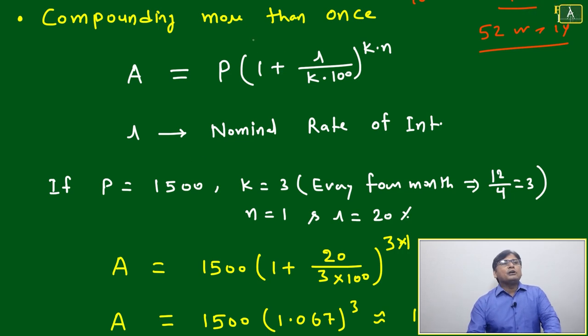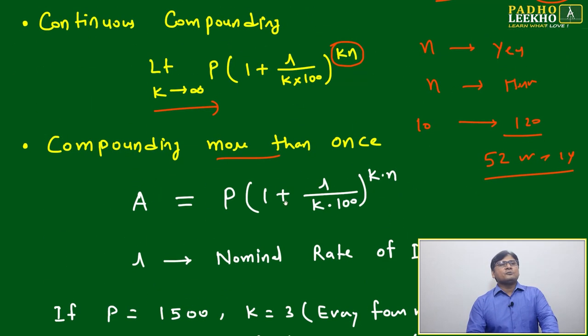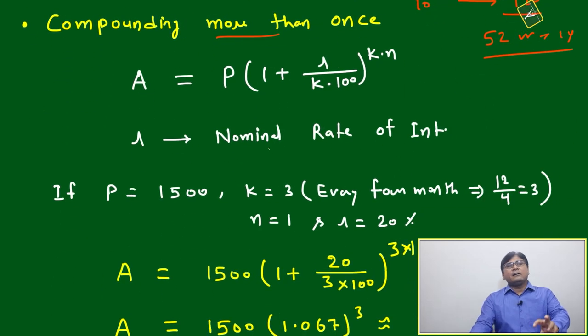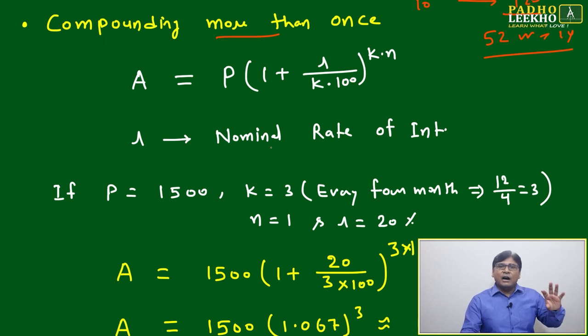We can understand compounding more than once - it is just a subset of continuous compounding. If k is very large, that's continuous compounding. But if k is defined like half-yearly, quarterly, or monthly, then we can correlate it with EMI or installment payments.